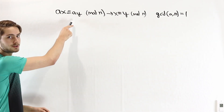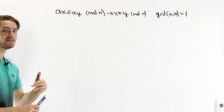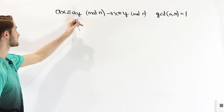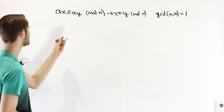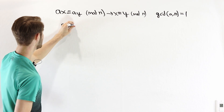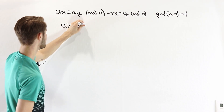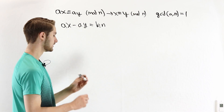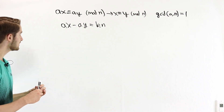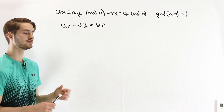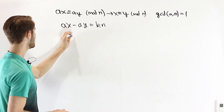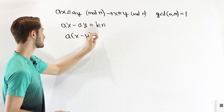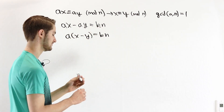Let's see why that's true. Starting with ax ≡ ay mod n, by the definition of congruence mod n, the difference ax − ay must be a multiple of n. Factoring out a on the left side, we get a(x − y) = kn for some integer k.